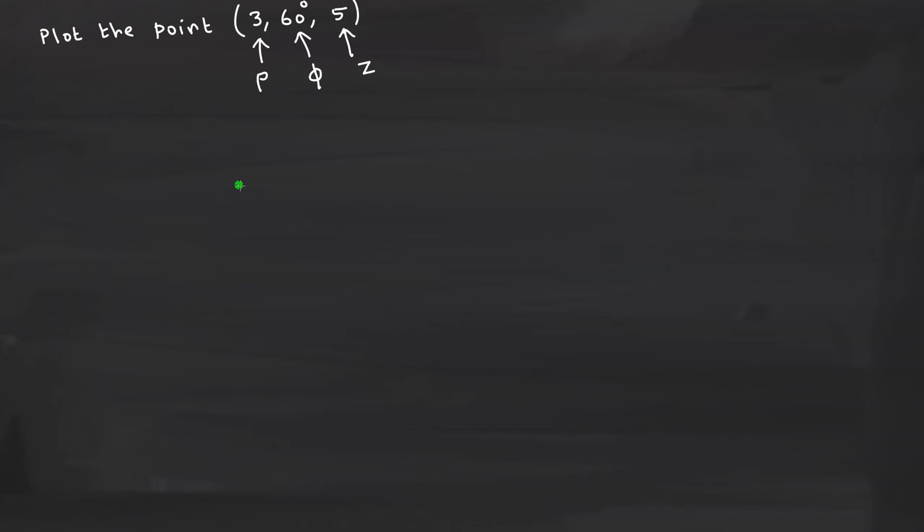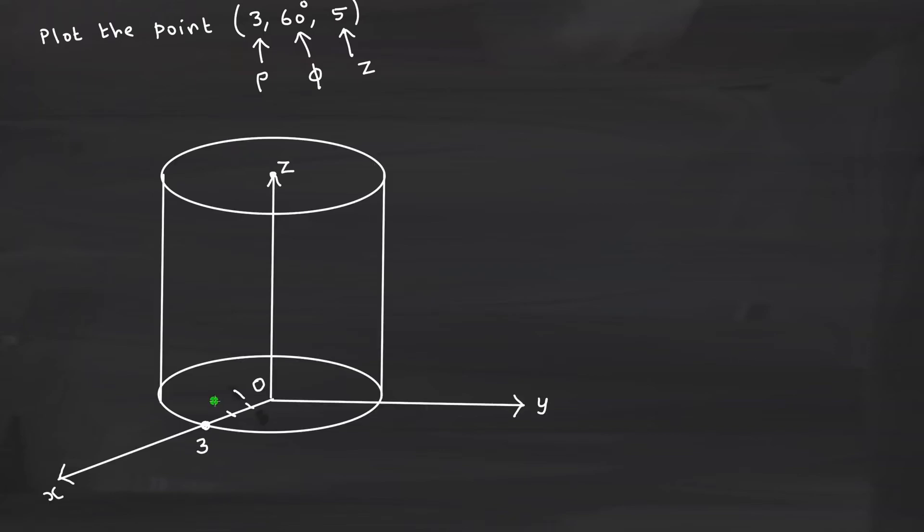For that what you do is, first of all you have to draw the cylinder. Let me draw and show it to you now. 1, then that will be 2 and this point will be 3, okay, that's fine. First of all you have to understand what do you mean by that 3 here? You are starting from the origin and then you are walking along the x-axis until you reach the point 3, and once you are on point 3, you have to make an angle of 60 degree.